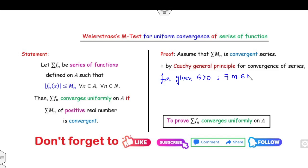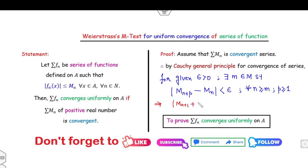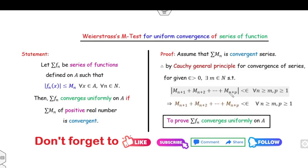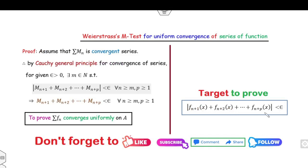The Cauchy condition states: |M_{n+p} - M_n| < ε for all n > m and p ≥ 1. Opening the bracket gives M_{n+1} + M_{n+2} + ... + M_{n+p} < ε. Therefore, by the Cauchy criteria for convergence, since all M_n are positive real numbers, there is no need for the absolute value, as M_{n+1}, M_{n+2}, and so on are all positive.